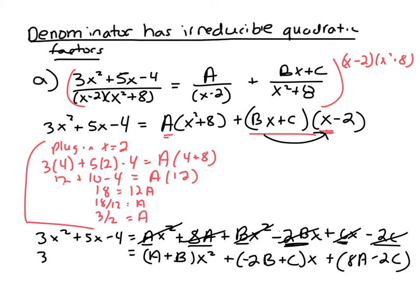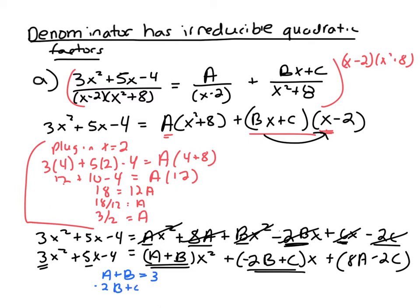Comparing the right-hand side to the left-hand side: 3 must equal a plus b (matching x squared terms), 5 must equal negative 2b plus c (matching x terms), and negative 4 must equal 8a minus 2c (matching constant terms). So I write out the system: a plus b equals 3, negative 2b plus c equals 5, and 8a minus 2c equals negative 4.